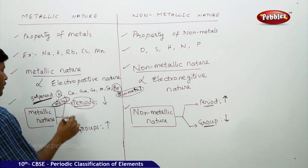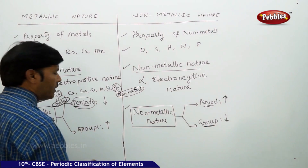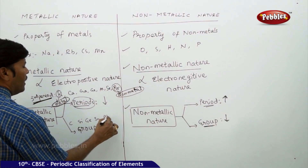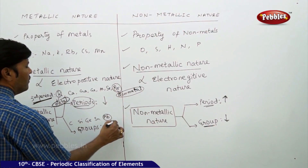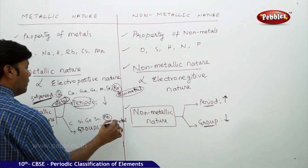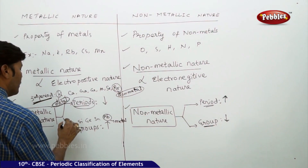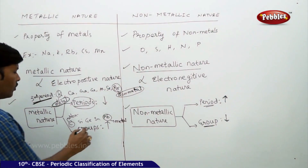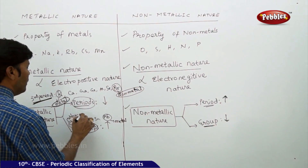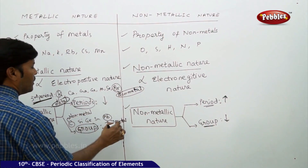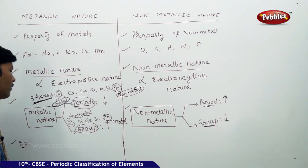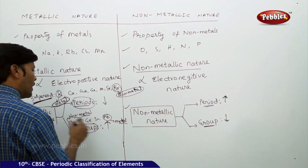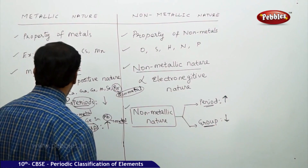If you go for a group, take the carbon family: carbon, silicon, germanium, tin, and lead. Here, lead is a metal and carbon is a non-metal. Carbon, silicon, germanium, tin, and lead all belong to the same group. In a group, the starting element is a non-metal and the last element is a metal. So in a group, metallic character increases, and in a period, non-metallic character increases.